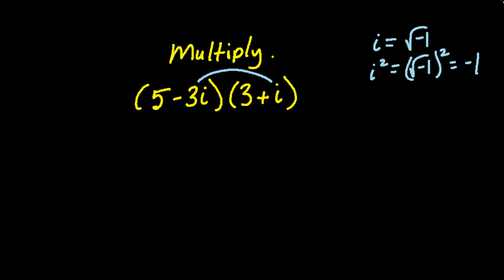So let's treat this like a foil problem. 5 times 3 is 15. 5 times i is positive 5i. Negative 3i times 3 is negative 9i. And negative 3i times i is negative 3i squared.